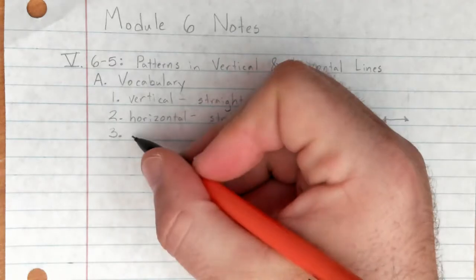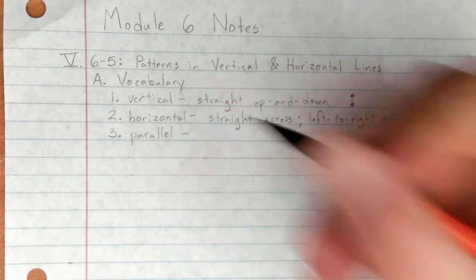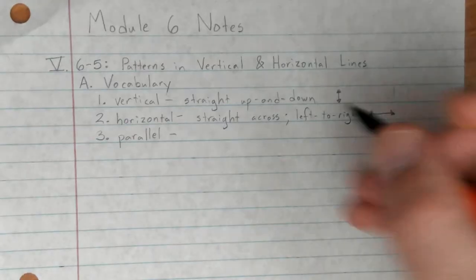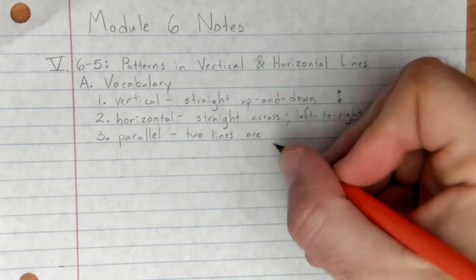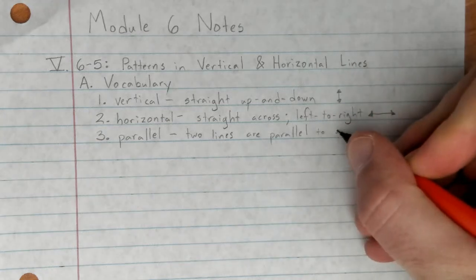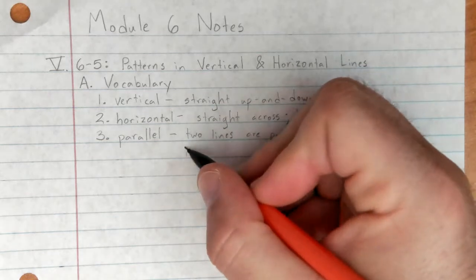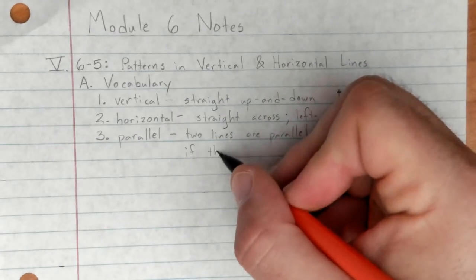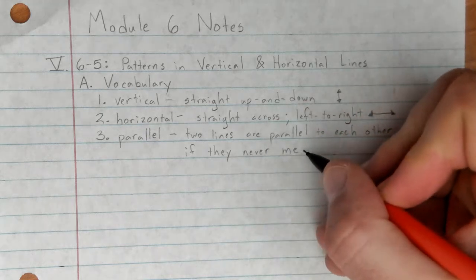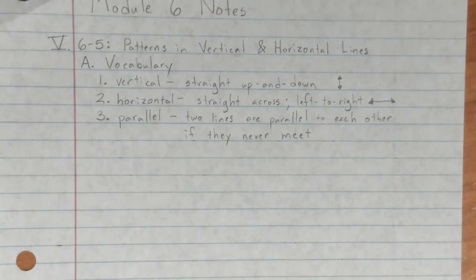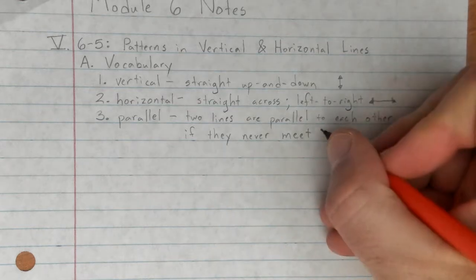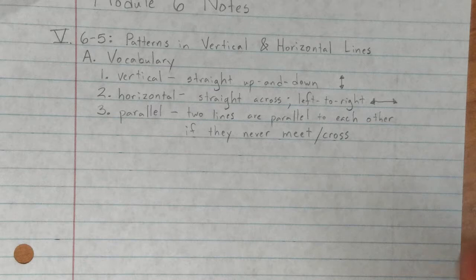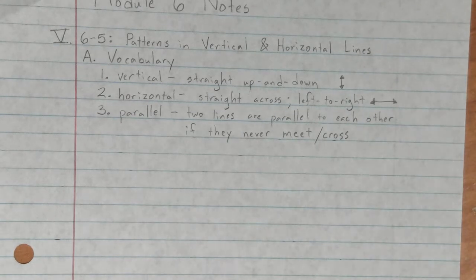Our next word, we've talked about this quite a bit. Parallel. Two lines are parallel to each other if they never meet. Now mathematically, every point in one line is the exact same distance from another point in the other line, and they're the same distance across the entire line, and they never meet, they never cross. That's what I want you to hang on to, that's what I want you to remember. Parallel lines are parallel to each other because they never meet, they never cross, they never intersect or touch.